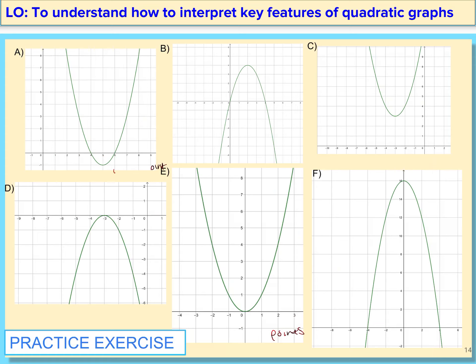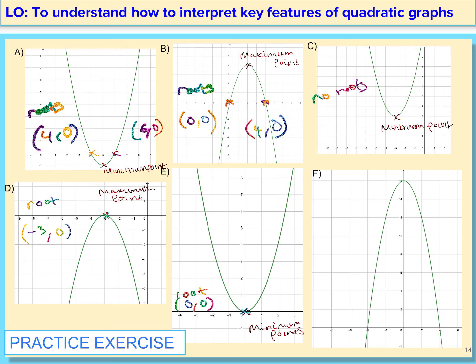So here are the practice exercises. What I want you guys to do here is label if the graph is positive or negative and also label the roots as well of these graphs. Make sure to copy down these graphs into your book as well. If you haven't paused your video, this is the time to do so. Great job. Make sure you mark your work in green pen.